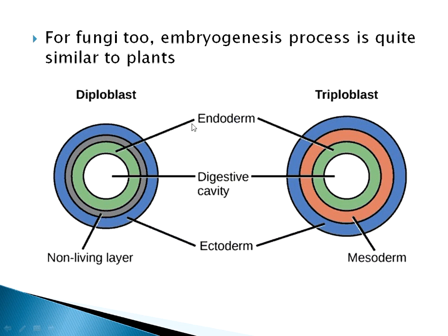Imagine a layer of cells arranged in a spherical manner — this is a cross section of a sphere, so it appears as a circle. There is another layer of cells inside it, and separating those two layers is a non-living layer. The inner layer is called the endoderm, and inside the endoderm is the digestive cavity, also called the gut.